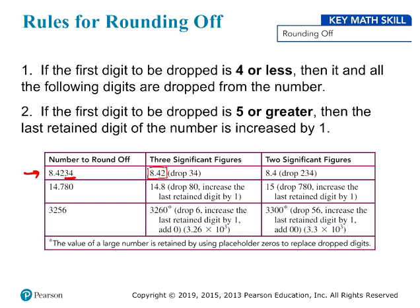Now what if we were rounding that to two sig figs? Then we're going to drop the 2, the 3, and the 4. And because that first digit we're dropping, the 2, is less than 5, we're just going to keep our values the same. And we have 8.4.